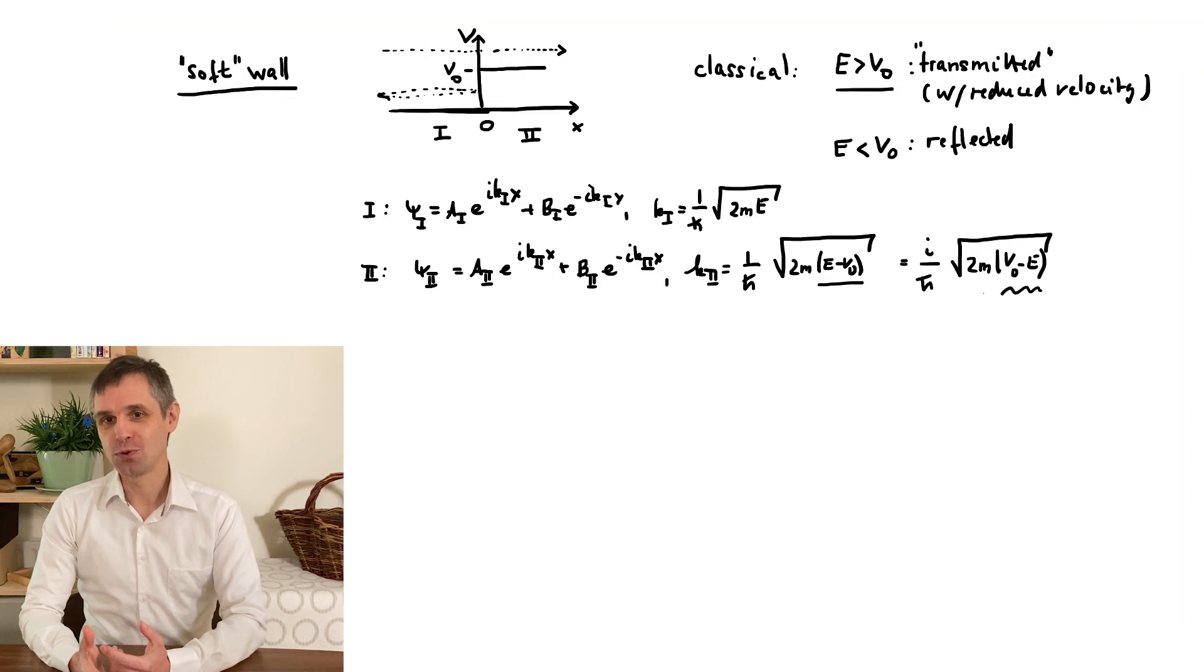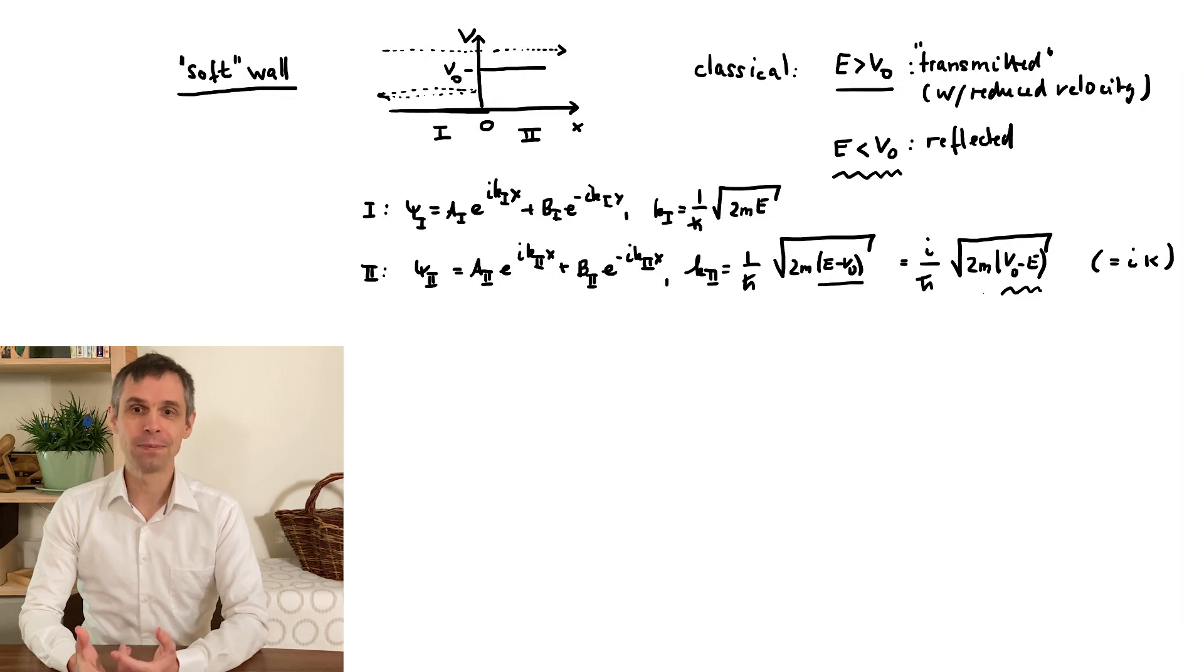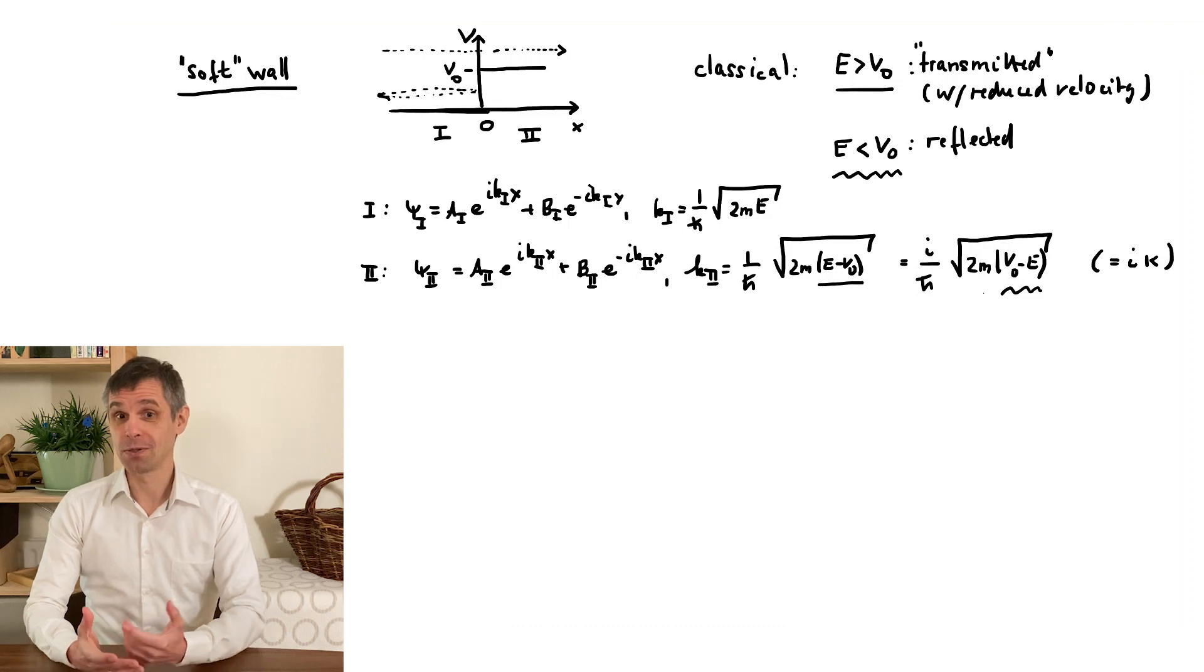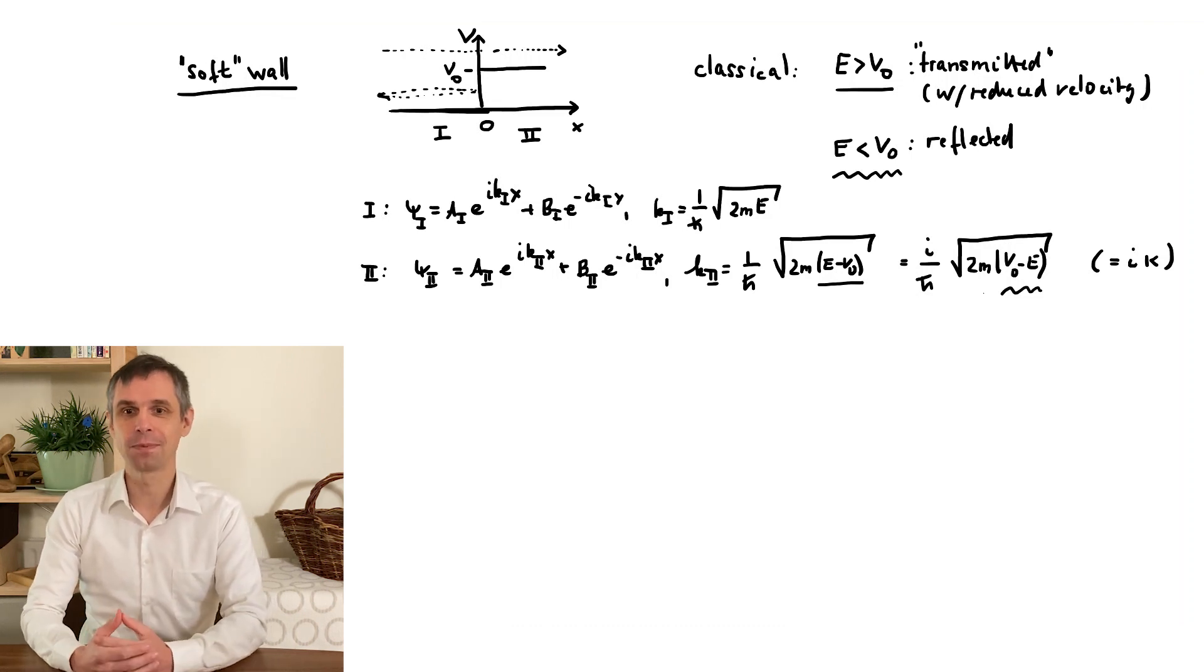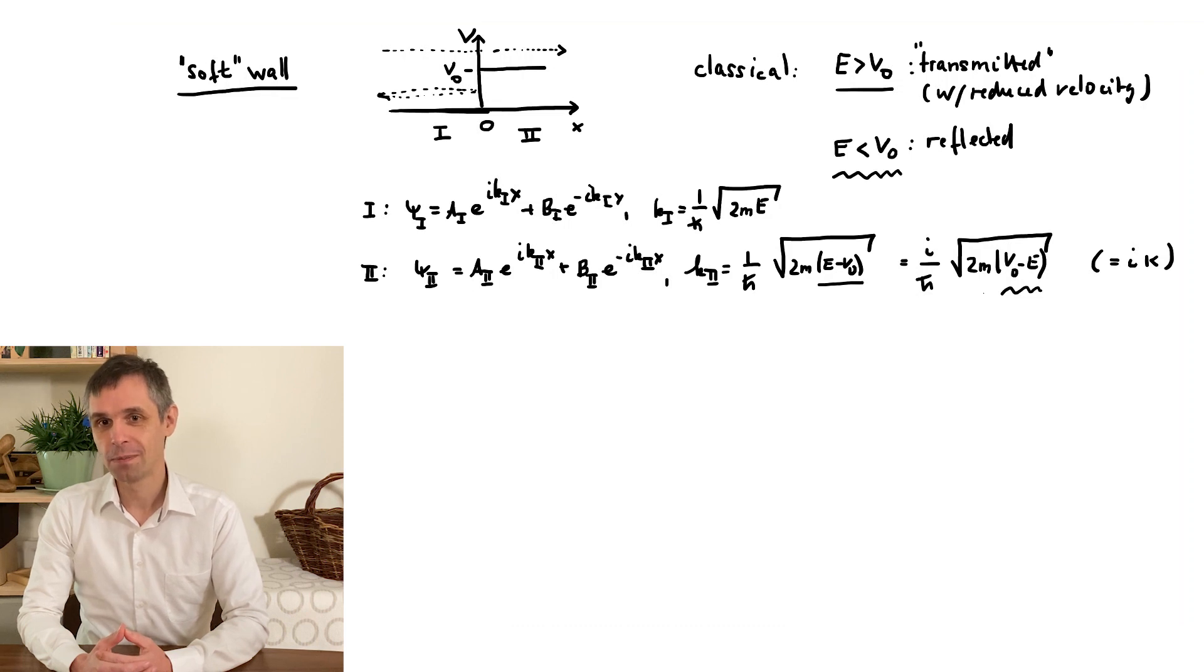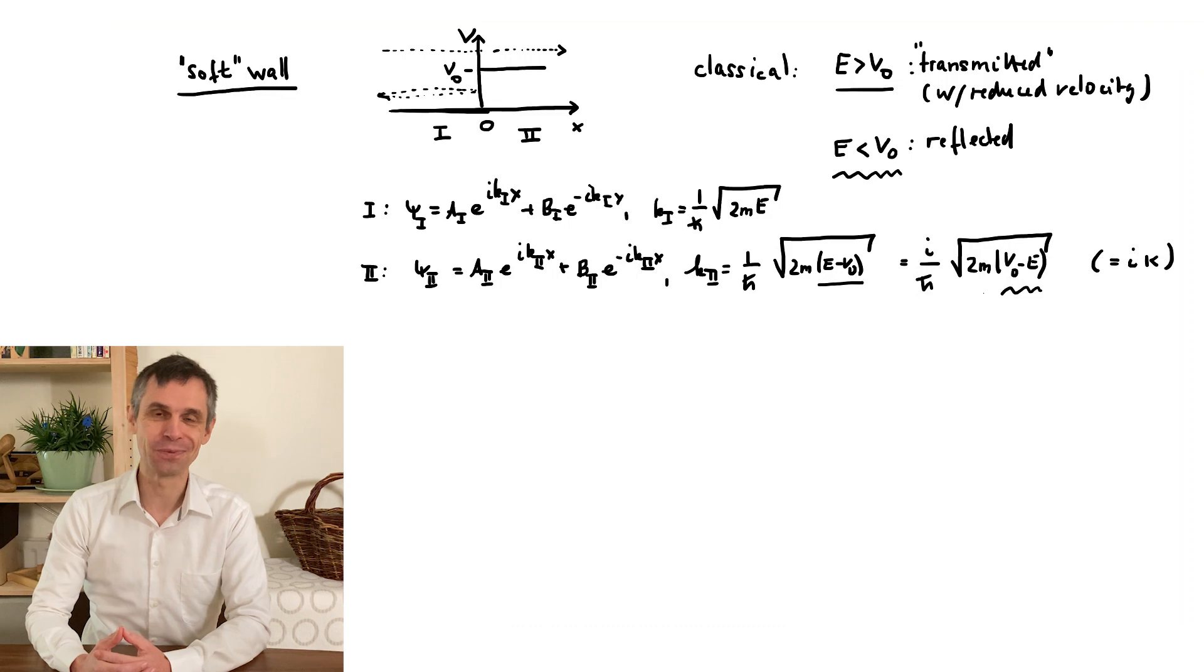So, we have to distinguish exactly the same two cases as in the classical situation, even though our findings will be quite a bit more interesting. To keep things organized, we will first consider the case where the energy is larger than the potential energy in the wall, but we will do it in a way so that the other case will not require much extra work.